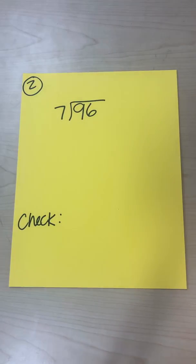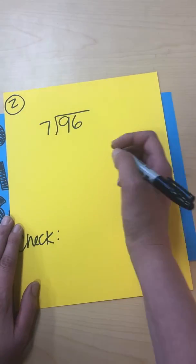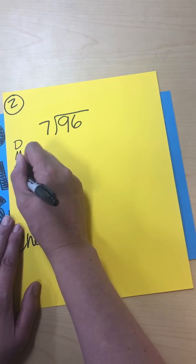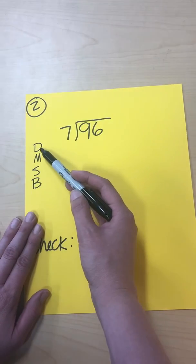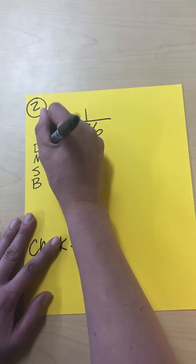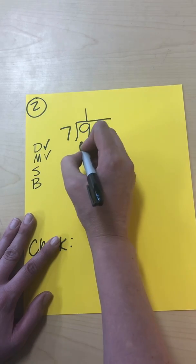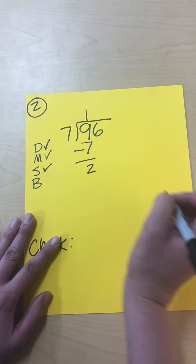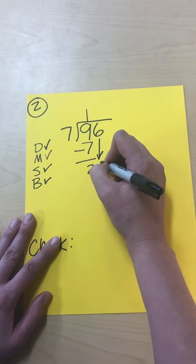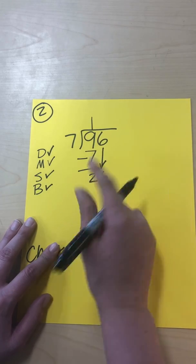Problem number two — we'll use all those same steps. If you need to, you can write the steps right on your paper, like 'don't miss school bus,' and put a check mark next to each one as you use it. First, divide: seven goes into nine one time. Multiply: seven times one is seven. Subtract and get two. Then bring down the next number, which is six.